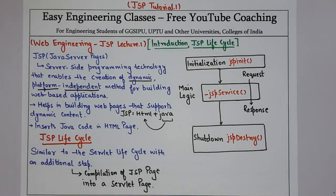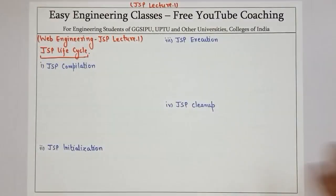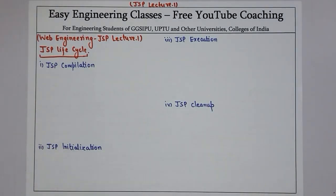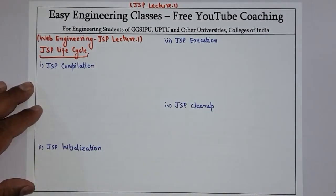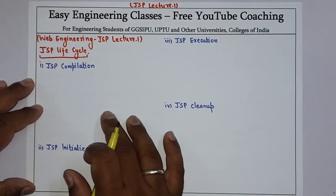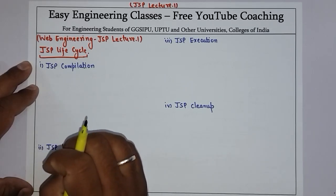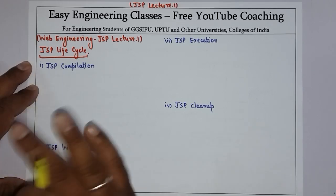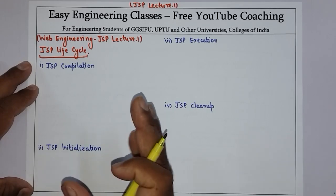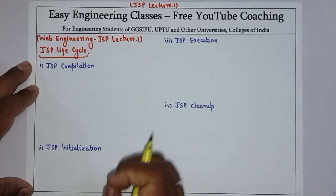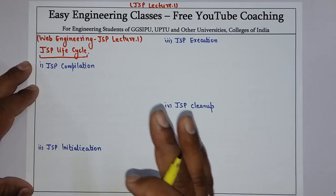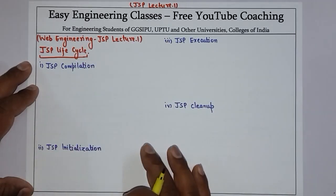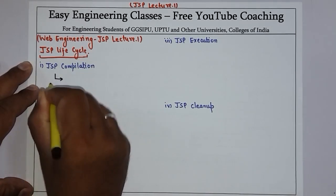Now let's see each of these phases in more detail. As we have seen, the JSP life cycle is exactly similar to the servlet life cycle with an additional step of JSP compilation. The first step in the JSP life cycle is JSP compilation. Whenever a browser asks for a JSP, the JSP engine first checks whether it needs to compile the page or not. If the page has never been compiled into a servlet, then the JSP engine compiles the page. To run any JSP page, the compilation of the JSP into the servlet needs to be done first. The compilation process involves three main steps.